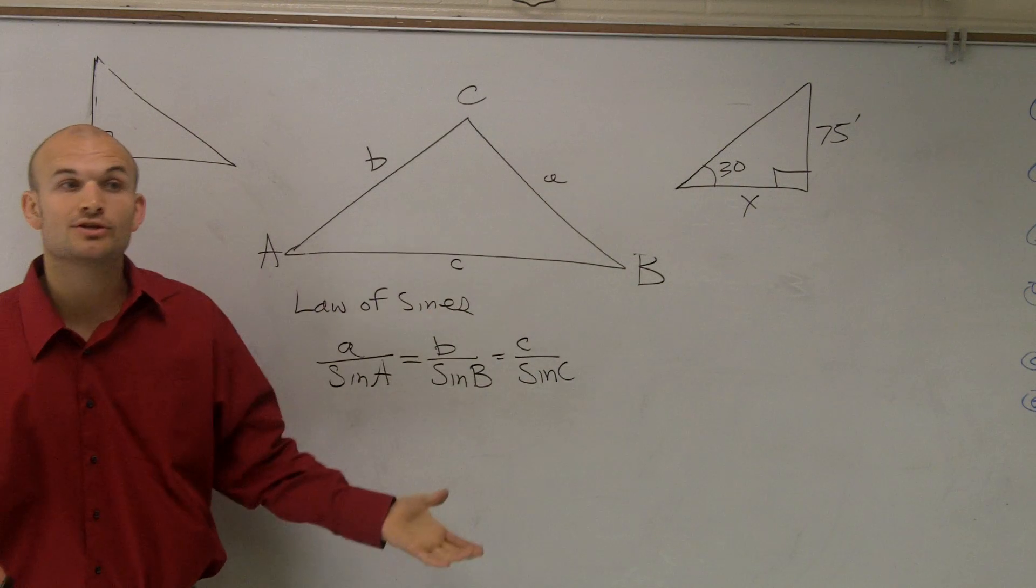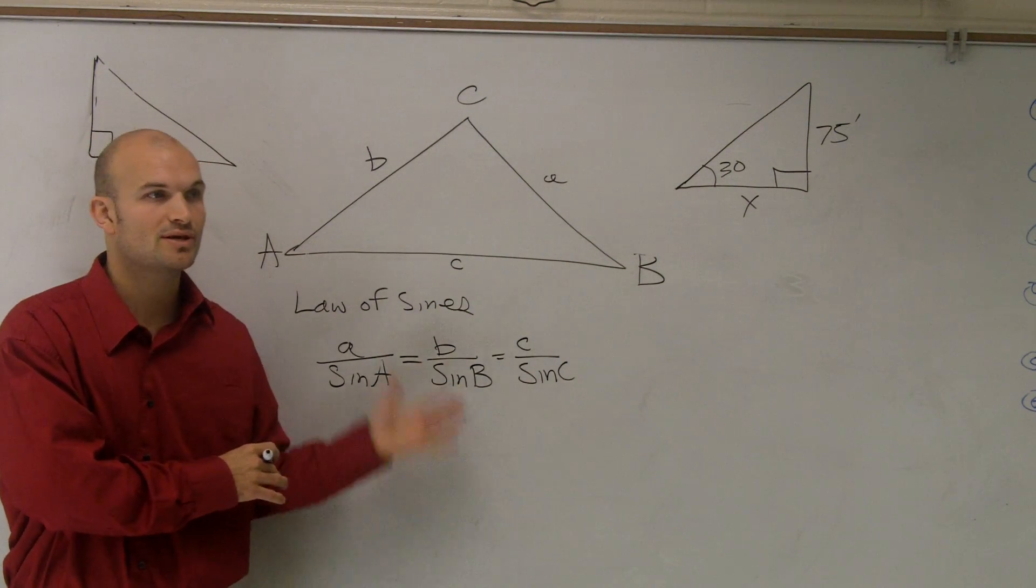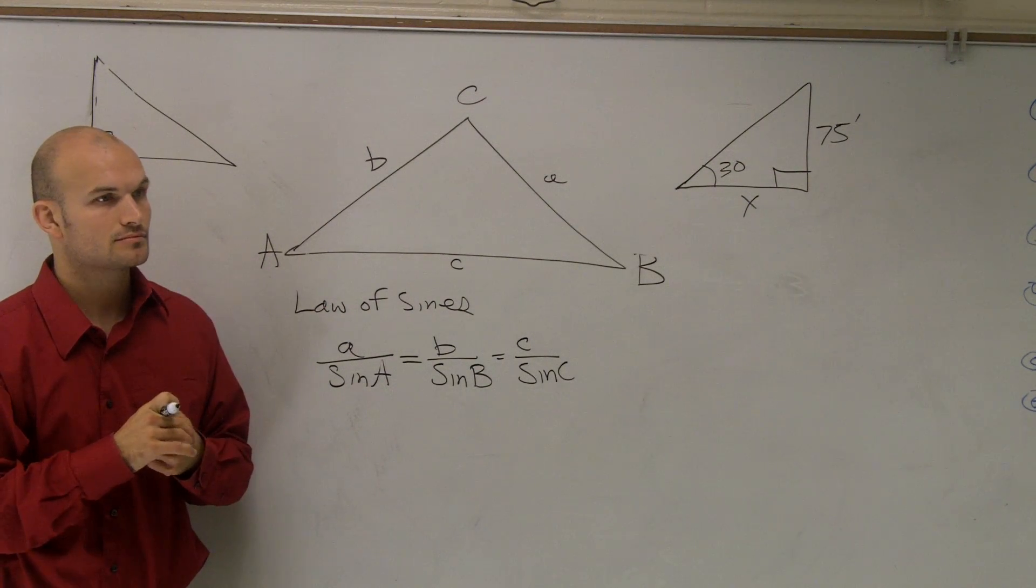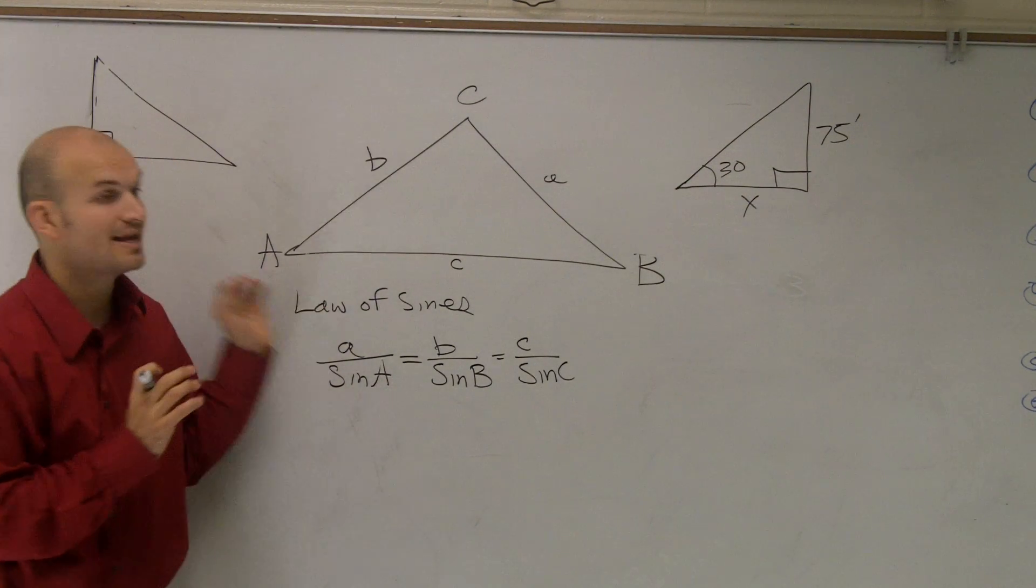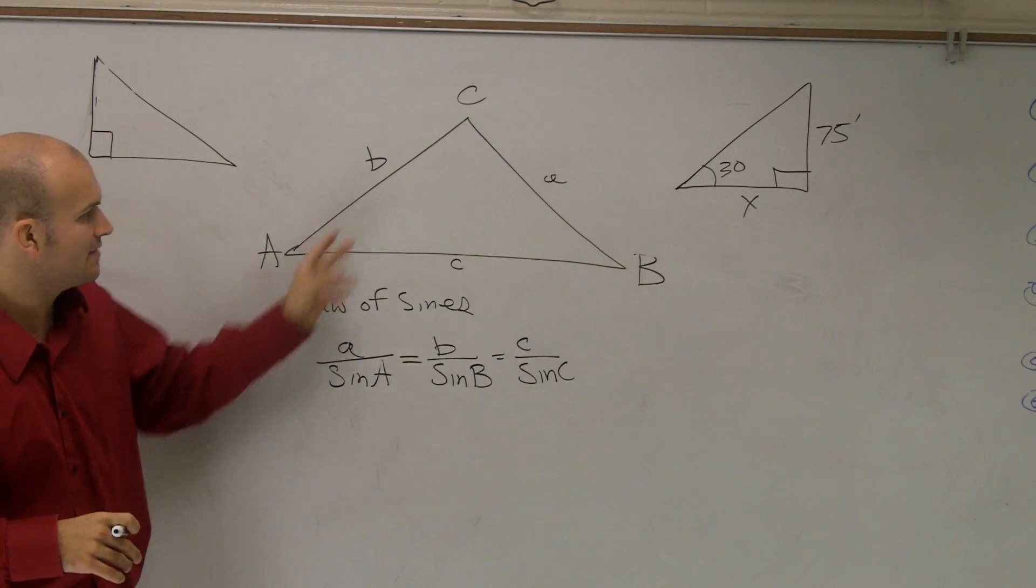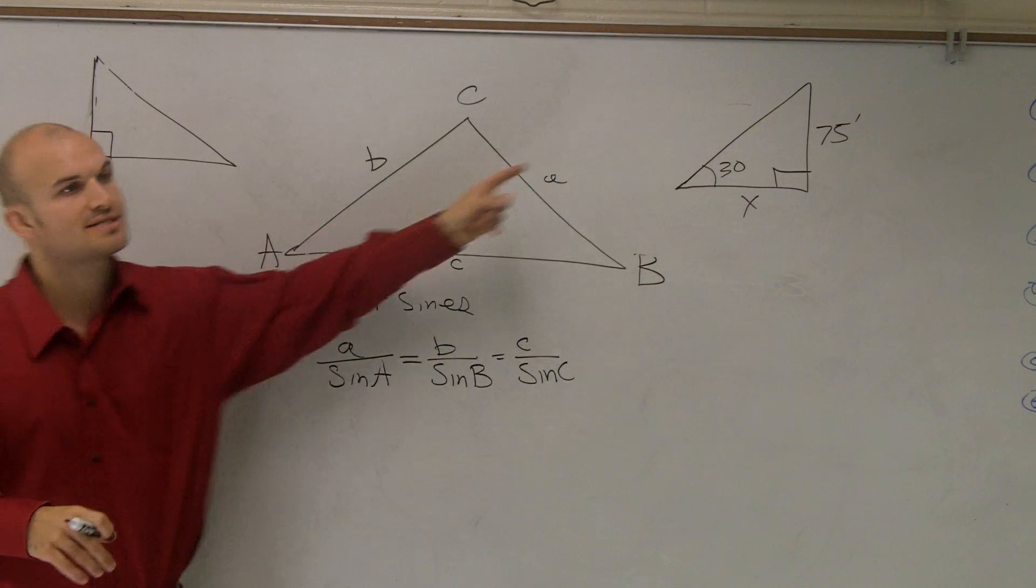So what we're going to do is I'm just going to show you how to do a problem, how we can apply this to be able to solve the missing lengths. Yes? Does it matter how it's labeled? Does the side have to be across from the angle? The side has to be across from the angle. Yes. Because that's the most important thing. That's what it means to A and sine of A. That's that relationship.